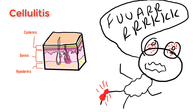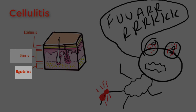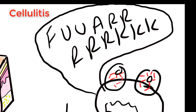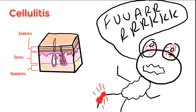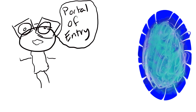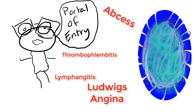Starting with cellulitis in the dermis, it pretty much affects the dermis layer and the subcutaneous fat. The affected area is usually going to be red, warm, and most of the time pretty painful — unless they're diabetic, in which case they may not feel too much pain due to neuropathy. This does require a portal of entry, meaning you need a break in the skin. Complications include thrombophlebitis, lymphangitis, and abscesses. In the case of dental procedures, you have to worry about Ludwig's angina — cellulitis in the submandibular space.